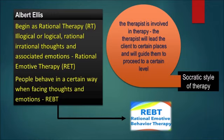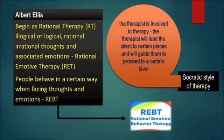Albert Ellis started by naming his therapy Rational Therapy (RT), where he worked on rational and irrational thought processes. He then found that along with logical or irrational thoughts, there are a number of emotions a person is also facing — so he added an 'E' to RT, and it became Rational Emotive Therapy, RET. Later, when he started working further, he noticed that people behave in certain ways when they are experiencing certain emotions and thought patterns, so he added a 'B' as well, and it became REBT — Rational Emotive Behaviour Therapy — as we know it today.